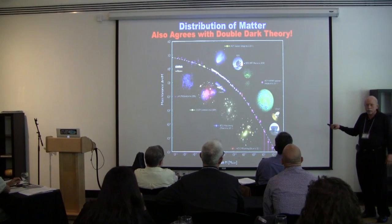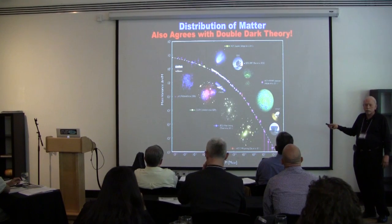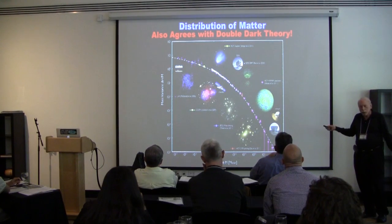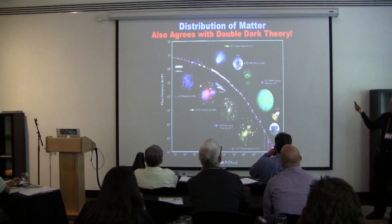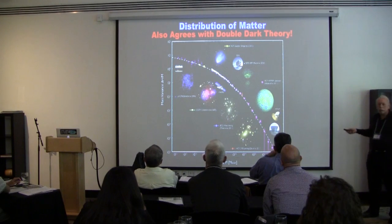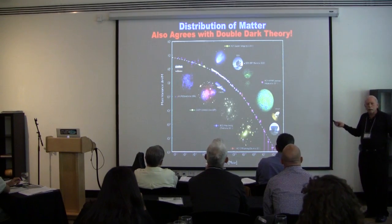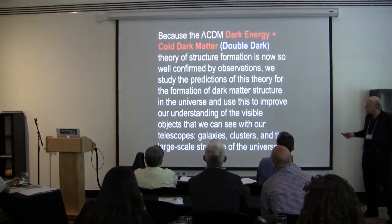The theory not only fits the Big Bang and the heat radiation released about 400,000 years after, it also fits the distribution of matter on all scales we can measure. This is the predicted spectrum of fluctuations in the cold dark matter theory — small scales to very big scales, ten orders of magnitude — and you just couldn't ask for a better fit. There are no known contradictions between the predictions of this theory and the large-scale structure of the universe.